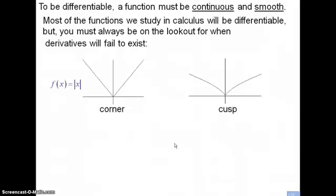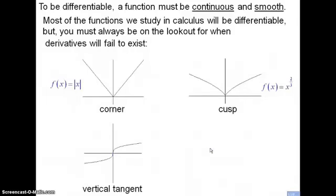Here's a function that has a corner, and here's another function that actually has a cusp. For example, x to the two-thirds has a cusp. It is a continuous function, well-defined everywhere — any x value I put into this function machine will get a well-defined output. However, when I take the derivative, it will fail to exist at x equals zero because there is a cusp.